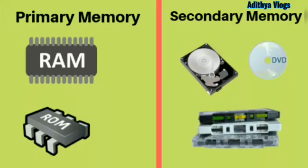Memory can be of two types: Primary memory and Secondary memory. In Primary memory, there are RAM and ROM. In Secondary memory, there are USB flash drive, CD and DVD, floppy disk, and hard drive.